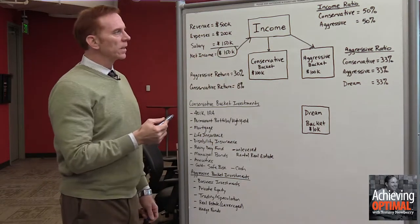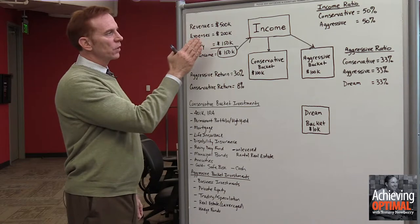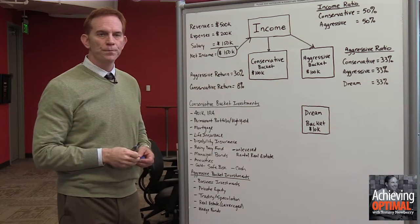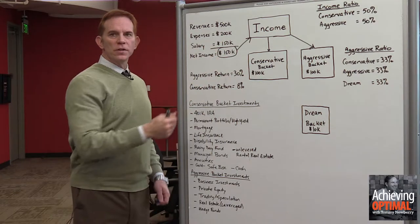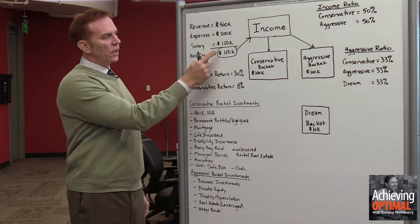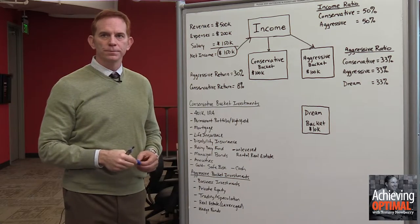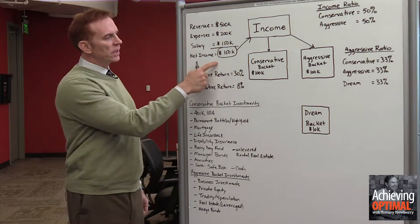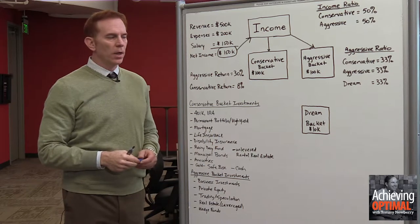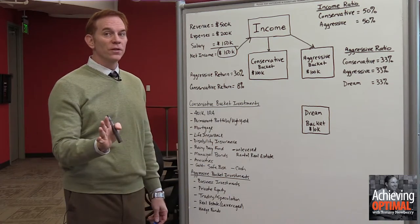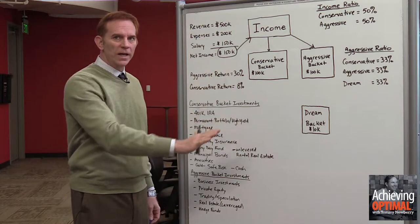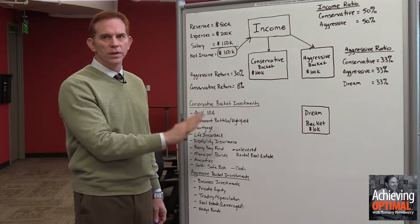In the example we talked about on the podcast, we have a business owner who has a business that does $500,000 a year in gross revenue, has $200,000 a year in expenses, and takes $150,000 a year in salary. That leaves us with a net income of $150,000. And as many of you know, the tax code is extremely complicated, so we're going to skip all tax considerations just to keep this really simple.